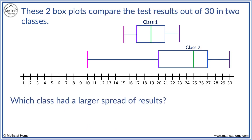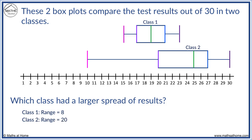Which class has a larger spread of results? We first compare the ranges. Class 1 has a maximum of 23 and a minimum of 15. 23 minus 15 equals 8, so Class 1 has a range of 8. Class 2 has a maximum of 30 and a minimum of 10. 30 minus 10 equals 20, so Class 2 has a range of 20. Therefore, based on the entire data set, Class 2 is more spread.